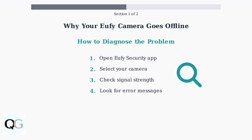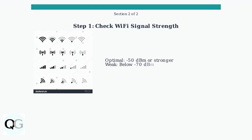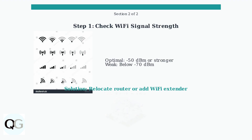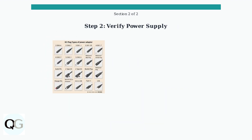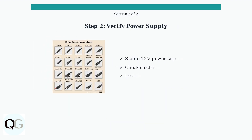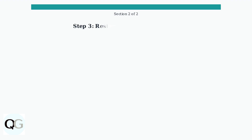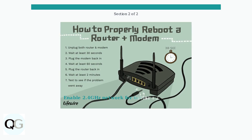To restore your camera's connection, first assess your Wi-Fi signal strength, as your camera needs a strong connection to stay online consistently. Next, verify your power supply — ensure your camera receives stable 12-volt power and check all electrical connections for looseness or corrosion. Then restart your router and modem to refresh the network connection.